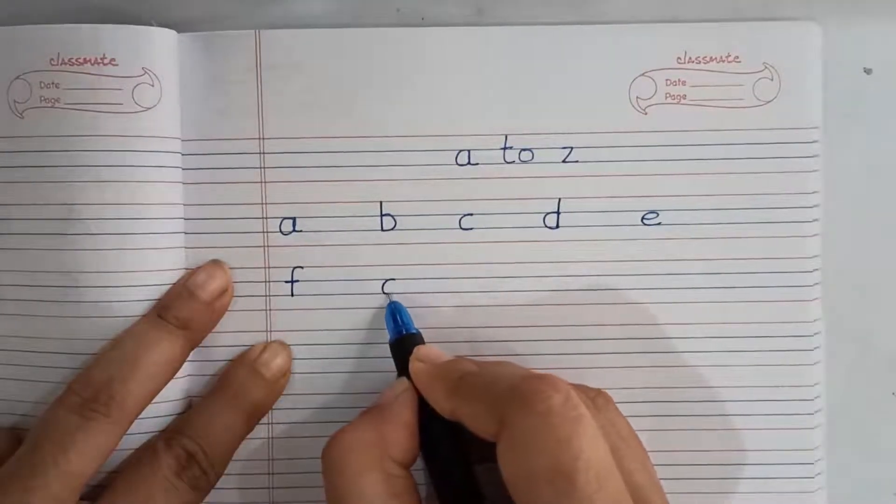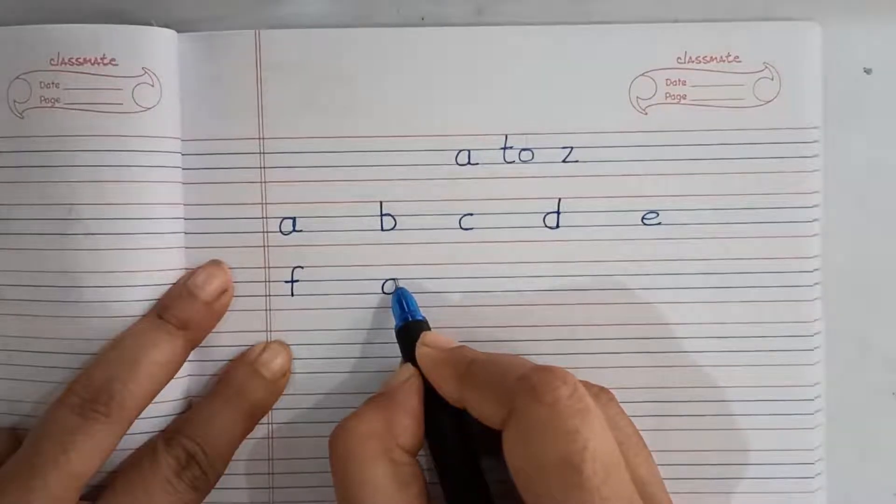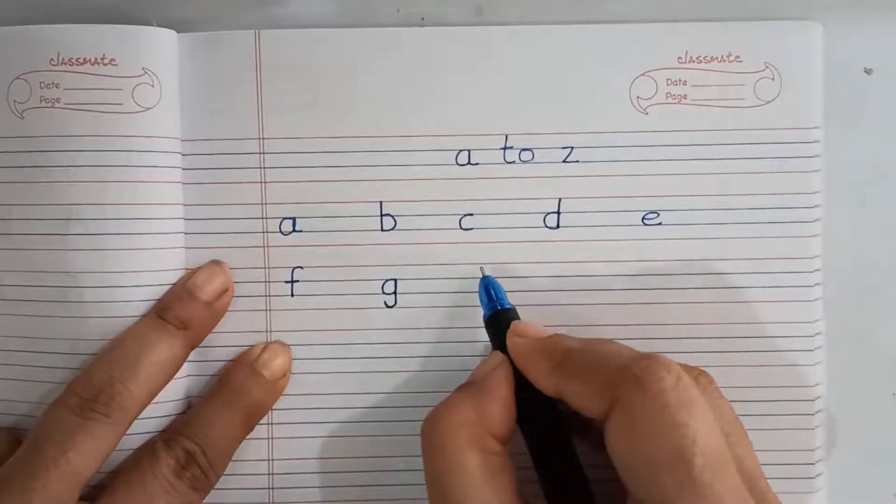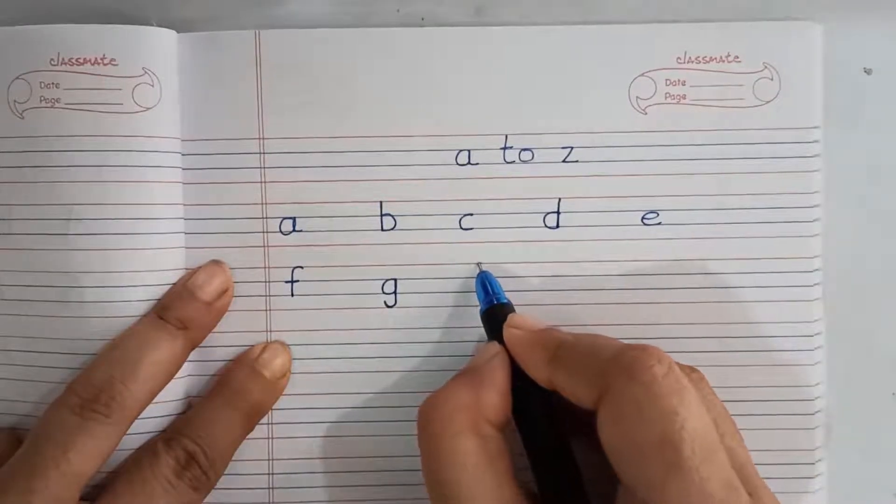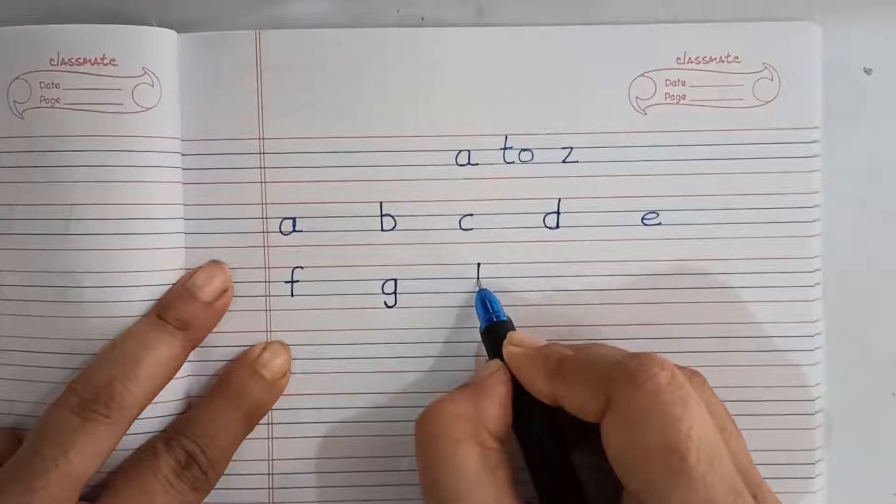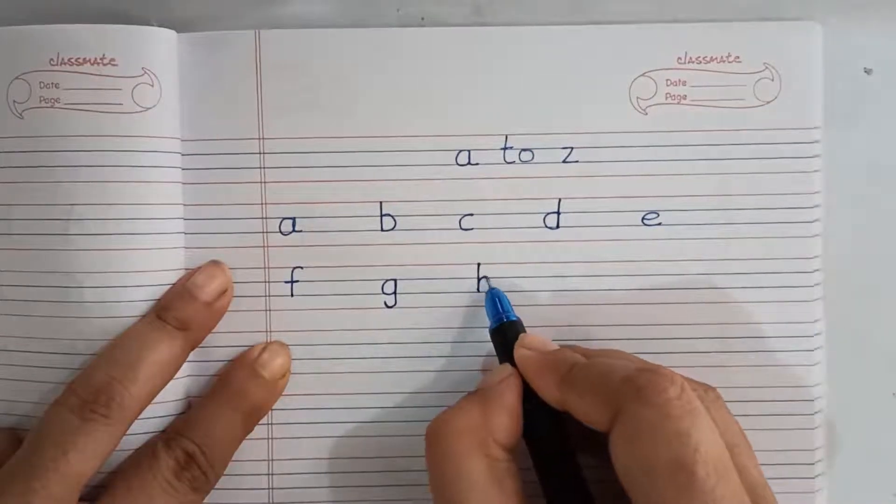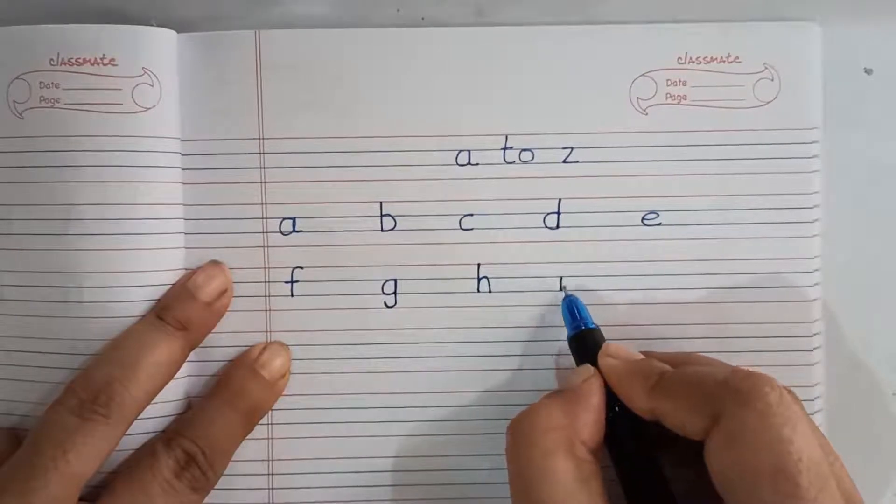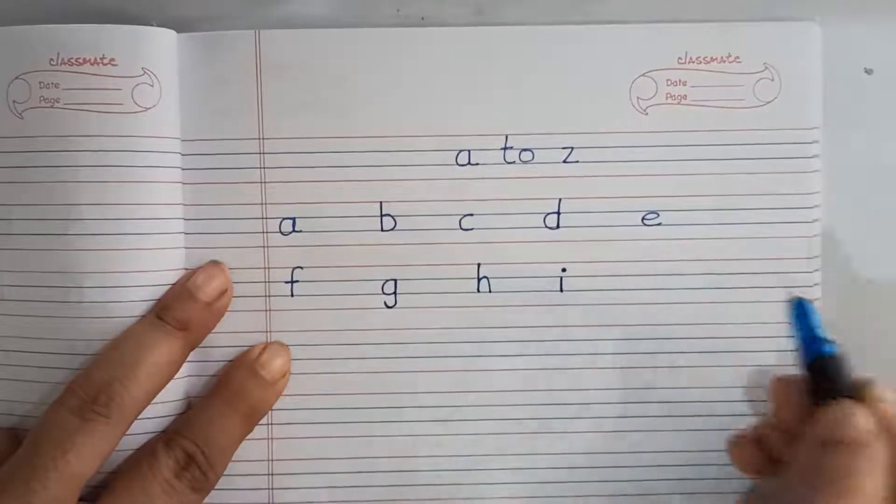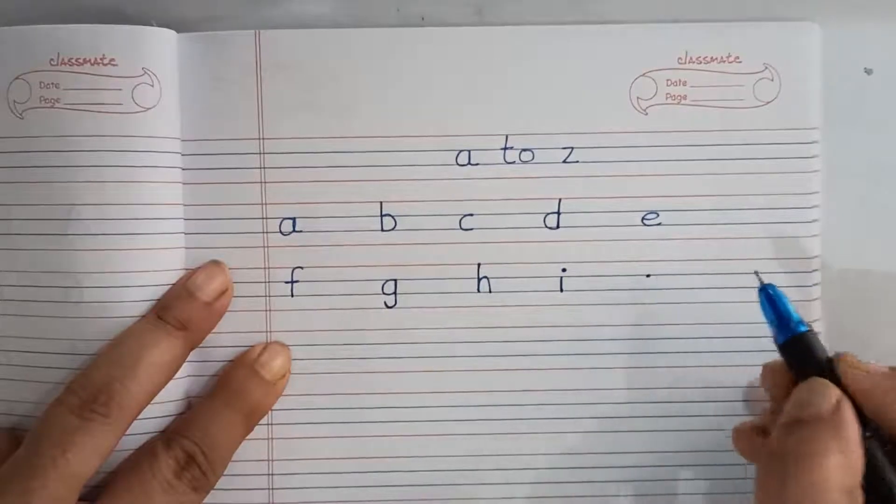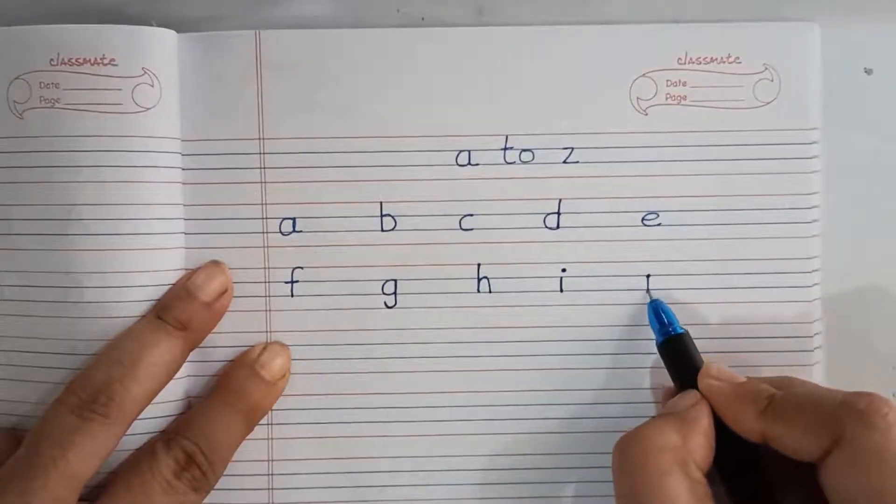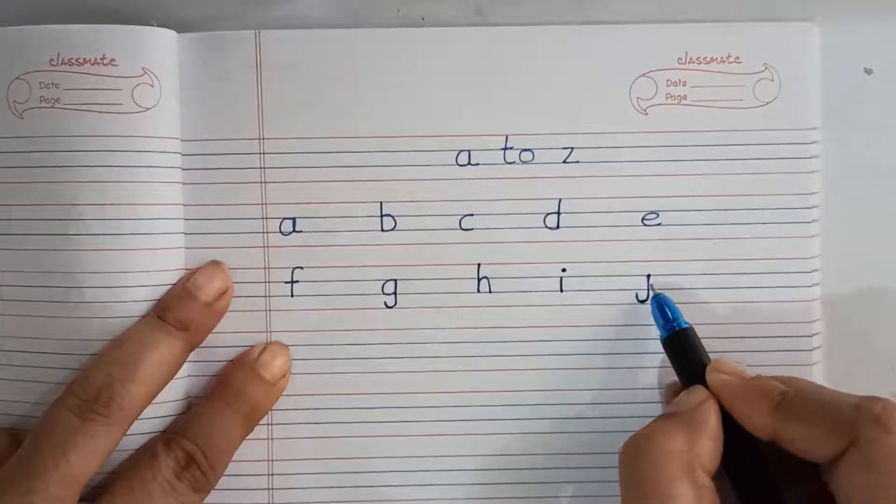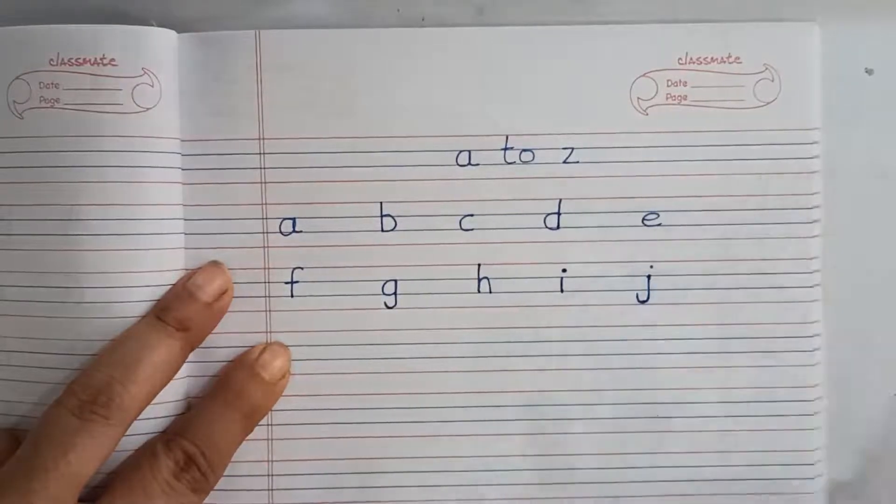G, we are starting from blue line. Then come down, make one standing line and small curve. Then H, red line to blue line, one standing line, then one small curve. I, only in the blue line, one standing line and one dot. J, from blue line we are starting, come down, small curve like Dadaji ki chadi and dot.